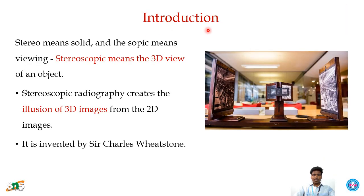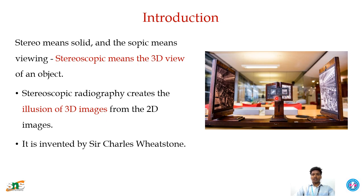Moving on to the introduction: 'stereo' means solid and 'scopic' means viewing, so stereoscopic means a three-dimensional view of an object. This relates to pixel and voxel, which are used in computed tomography. Pixel means picture element of a 2D image. When two images are obtained, the illusion is created with the help of a Wheatstone scope, forming the voxel image — a volume element — which is a 3D image.